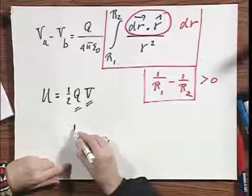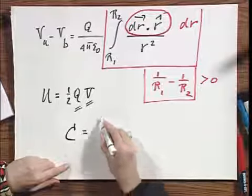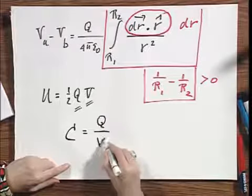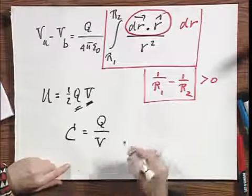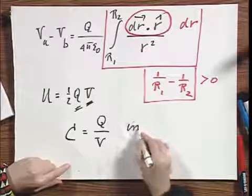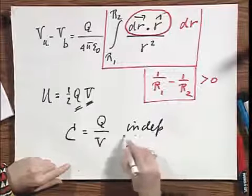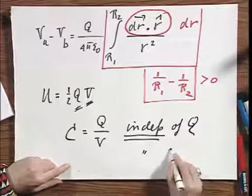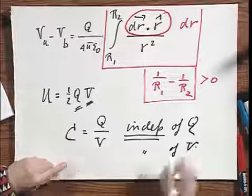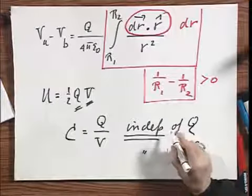If you were interested in what the capacitance is, then you take Q divided by V. We know Q. We just calculated V. And so you can calculate the capacitance. And I want to stress that the capacitance is independent of Q and it is independent of V. It only depends on geometry.